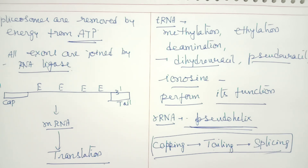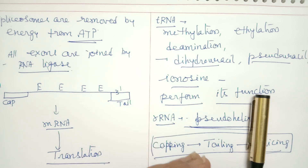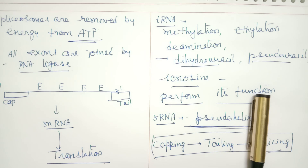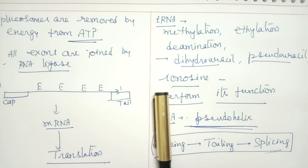With this I conclude this topic. In my next session I am going to start with genetic code, and then discuss the structures of the three types of RNA — mRNA, rRNA, and tRNA — before moving on to translation. Thank you very much, children. Follow my videos regularly, watch each video from beginning to end, and subscribe to my channel.